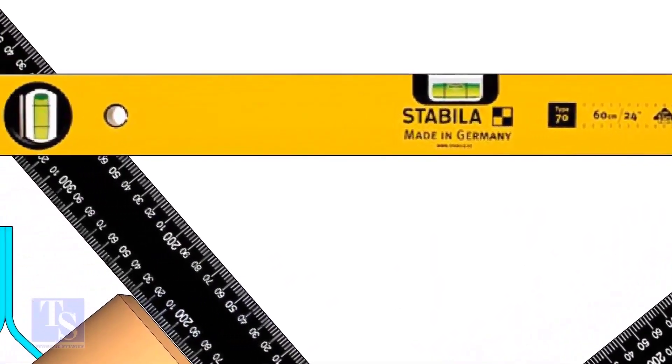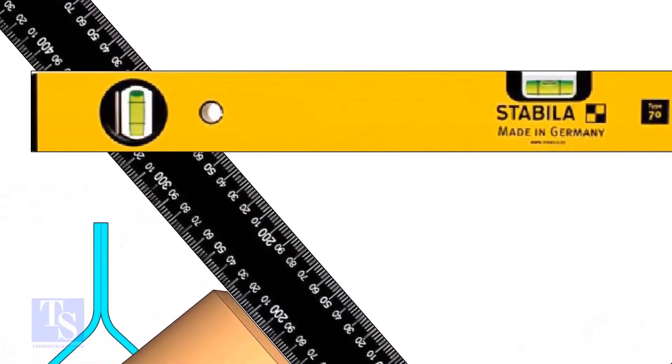Rotate the T, holding the right angle and the level bottle firmly, until the level bottle is in level.